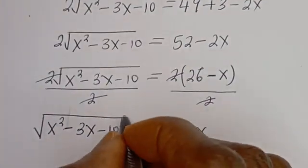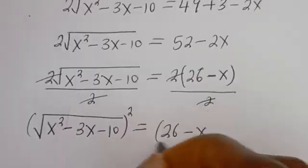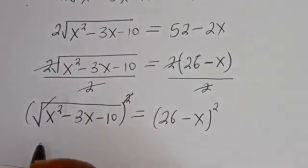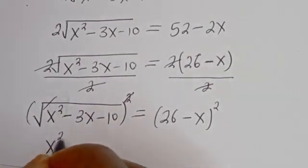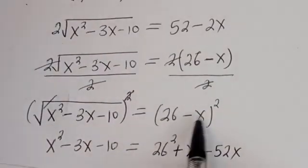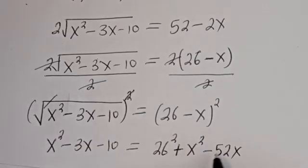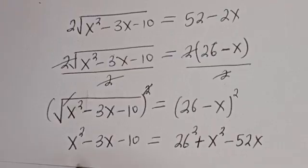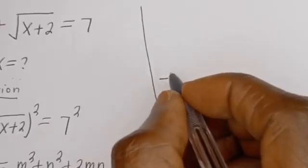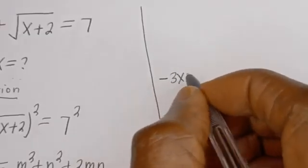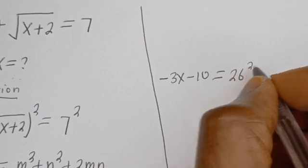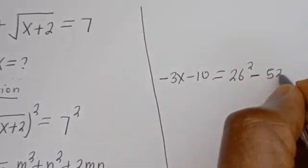Now let's square both sides of this equation again. We square both sides, and the square root cancels, so the equation becomes s squared minus 3s minus 10, equal to 26 minus s, all squared. Expanding the right side: 26 squared plus s squared minus 52s. Then we cancel the s squared on both sides, and we have minus 3s minus 10 is equal to 26 squared minus 52s.